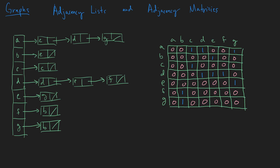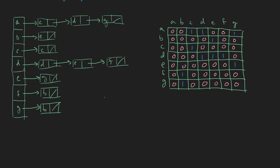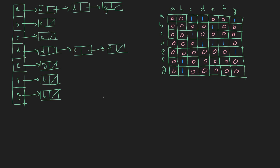Now let's do a little something else. Let's translate this into a visual representation that we are used to. So let's start with node A. We know that there's an edge from A to C, so I'm going to put C up here. There's also an edge from A to D, so let's draw a D node and draw an edge there. And then another one to G, so we're going to put G down here. That's our first one.